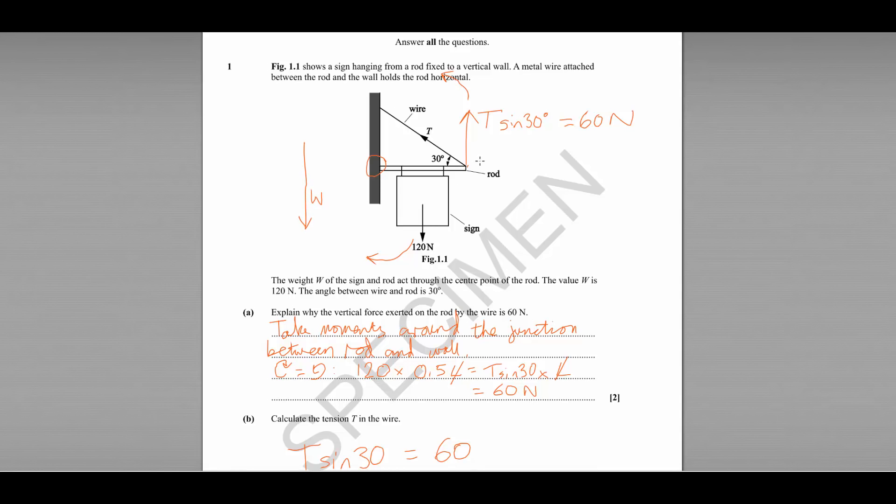We draw that here and then we take the next force which is T which is also 120. We chain that along there and then we find the force that would close up our triangle which in this case would be this force here F. So we can see that the direction of that force must be upwards like that. Let's label that F.